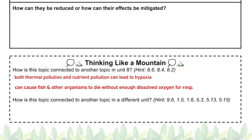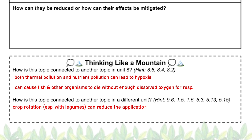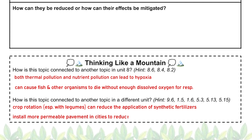In terms of topics from other units, sustainable agriculture techniques from topic 5.5 can be great strategies to reduce nutrient inputs into bodies of water. Farmers could use crop rotation with legumes to increase nitrogen levels in the soil and apply less nitrogen-containing fertilizer, or use cover crops between harvests to reduce runoff. We could also look at strategies from topic 5.13 — permeable pavement reduces urban runoff containing fertilizers from lawns or sediments, making it a great solution to reduce nutrient inputs into aquatic ecosystems.